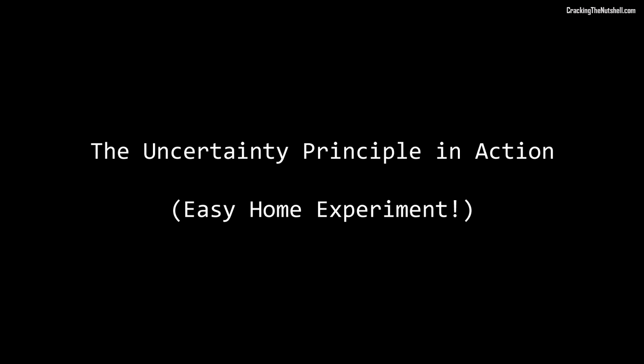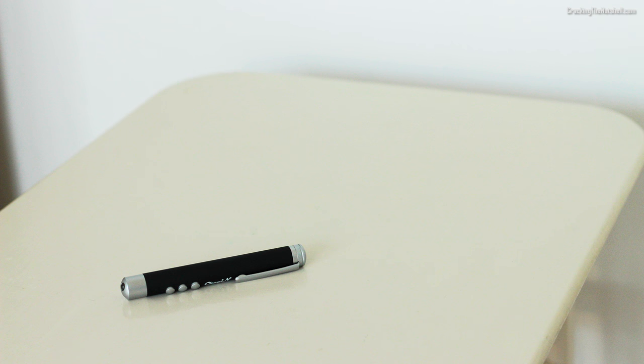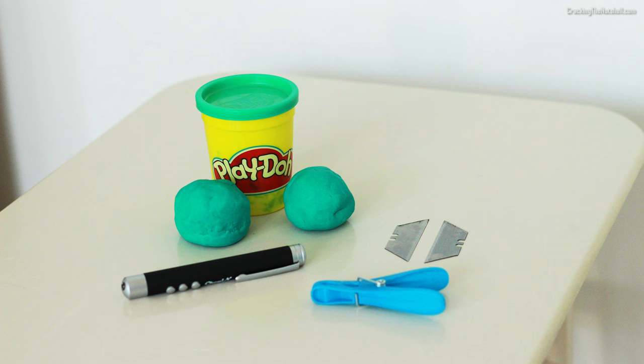Let's start with a little experiment to demonstrate Heisenberg's Uncertainty Principle, which can be easily set up at home and is cheap and fun to do. We're going to need a laser pointer, a couple of very sharp blades, a cloth peg and some playdoh. In addition, we will also need a smooth wall to act as our projector screen where the laser will be fired.